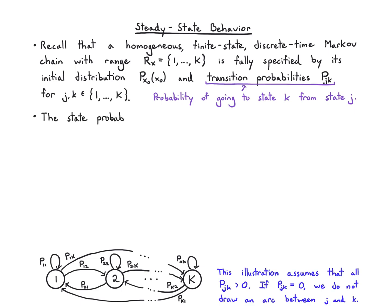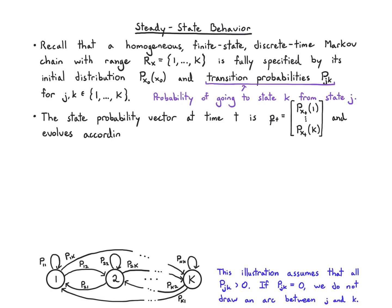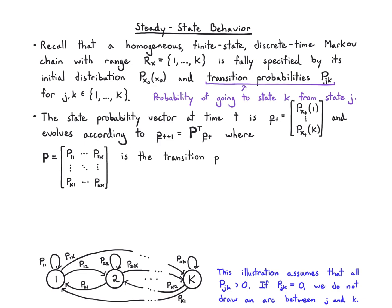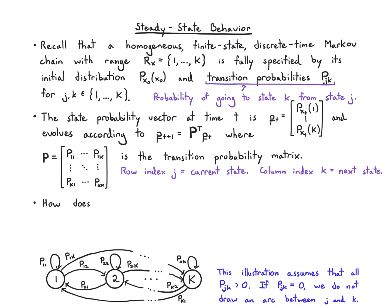The state probability vector at time t encodes the probability of occupying every state at that time. For states 1 through K, I write the probability of occupancy as a vector, and it evolves according to the transition probability matrix P, where the row encodes the current state and the column encodes the next state. I can update my probabilities by multiplying by that matrix transposed.